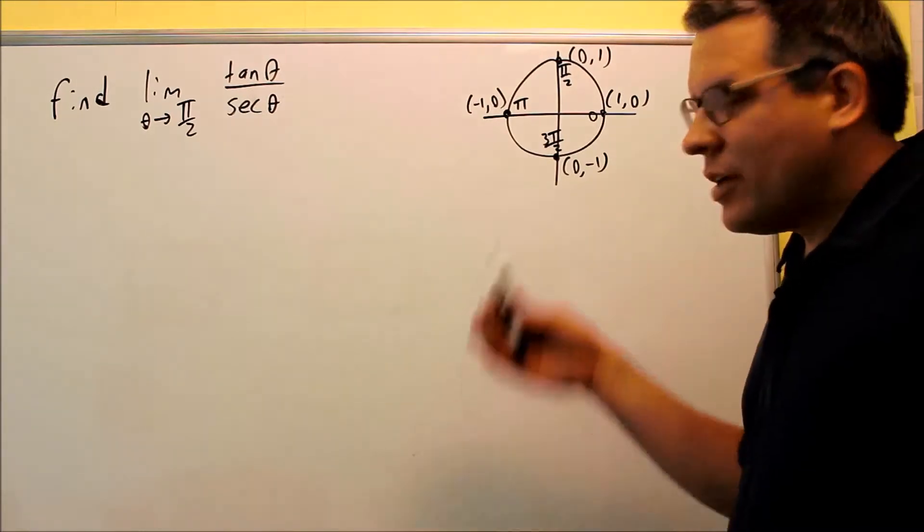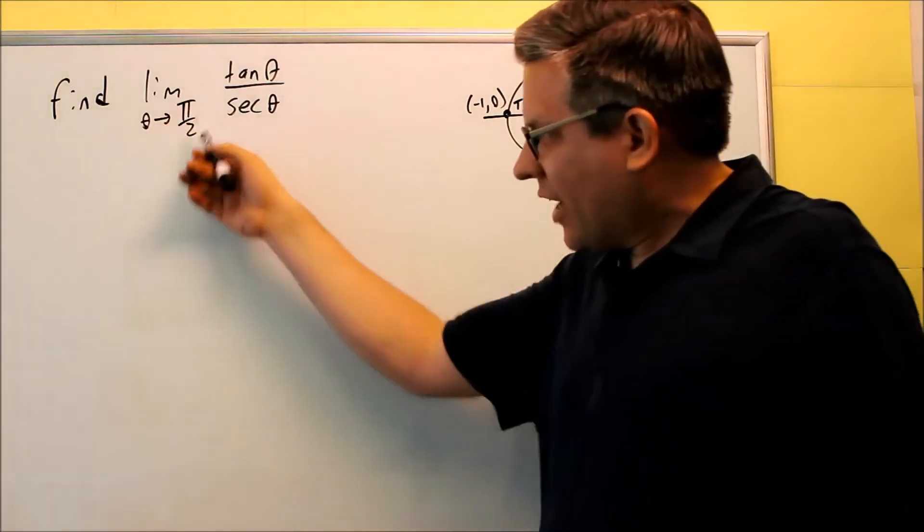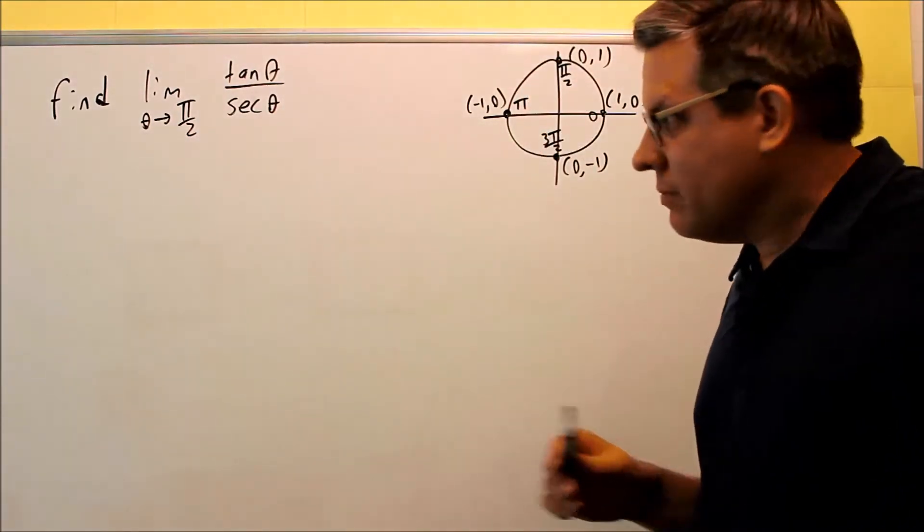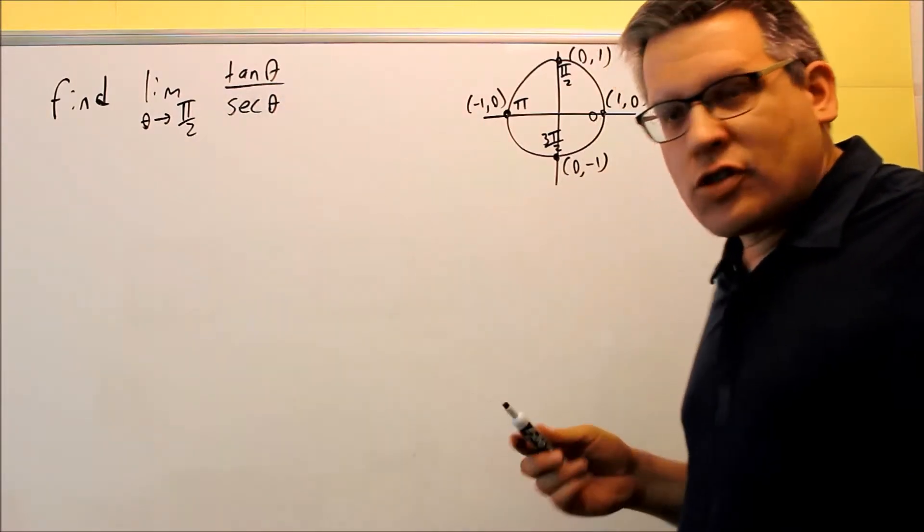Okay, here's another one with trig. Again, with these kind of problems, the first thing you always want to do is plug in the value to make sure you're not dividing by 0. If I plug π/2 in here, we need to know, first of all, an identity.